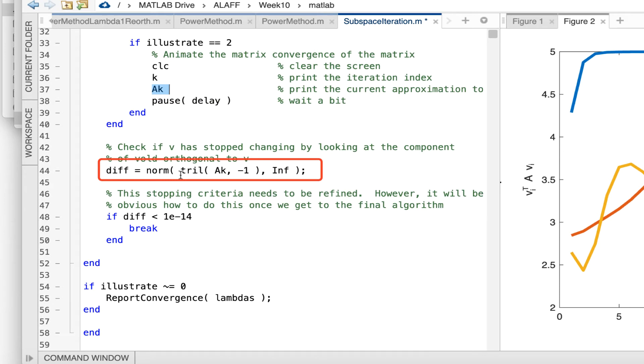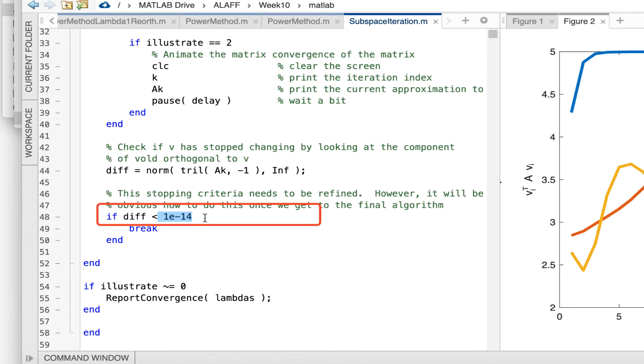Now the stopping criteria is not really ideal. Here what I do is I look at the strictly lower triangular entries of matrix AK, and if the largest in absolute value of those becomes less than 10 to the minus 14, I decide that I've done enough.